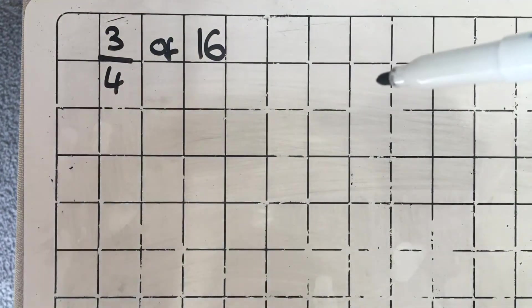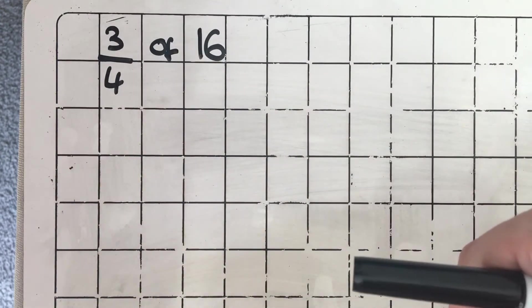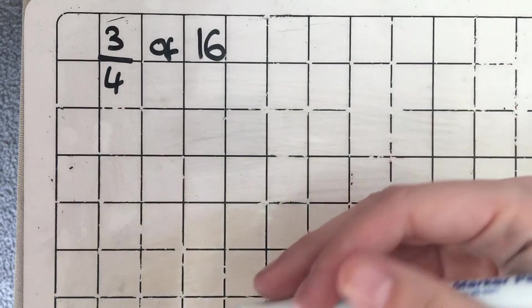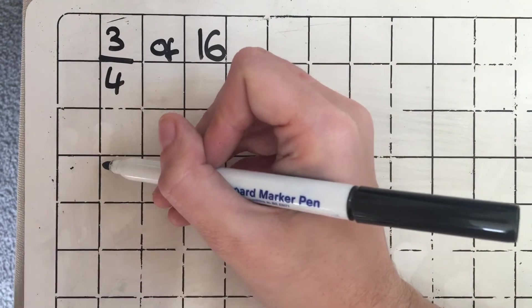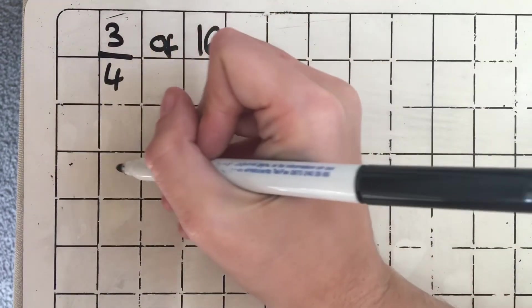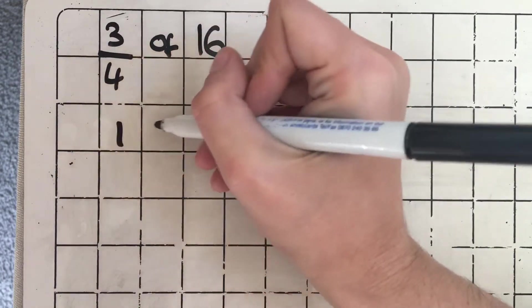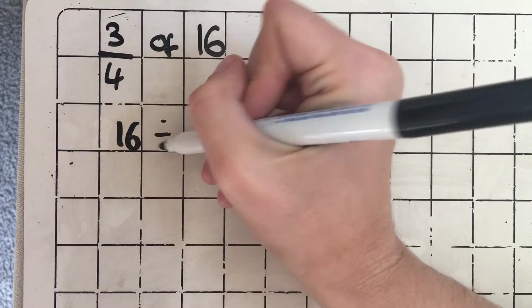So that means we need to split our whole, which is 16, into 4 equal parts and then select 3. So our first step then is to split the whole 16 into 4 equal parts, which is the same as doing 16 divided by 4.